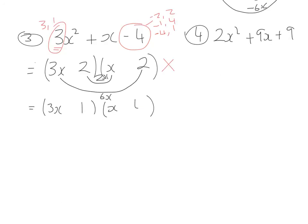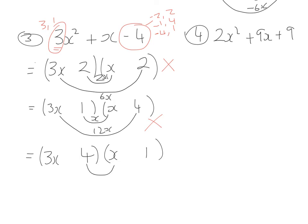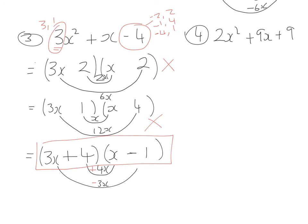Next we try 1 and 4: 1 times x = x and 3x times 4 = 12x. No combination of plus and minus gives +x. So we try 4 and 1: 4 times x = 4x and 3x times 1 = 3x. We need those to combine to give +x. One must be plus and one minus, so 4x minus 3x = +x. Therefore the 4 is positive and the 1 is negative, giving the answer (3x + 4)(x - 1).